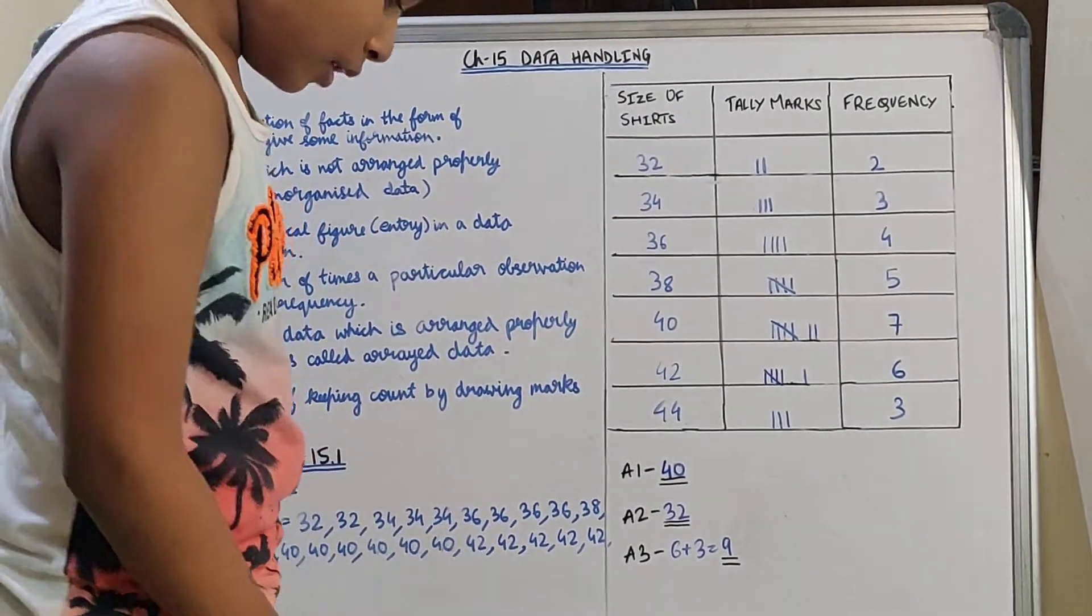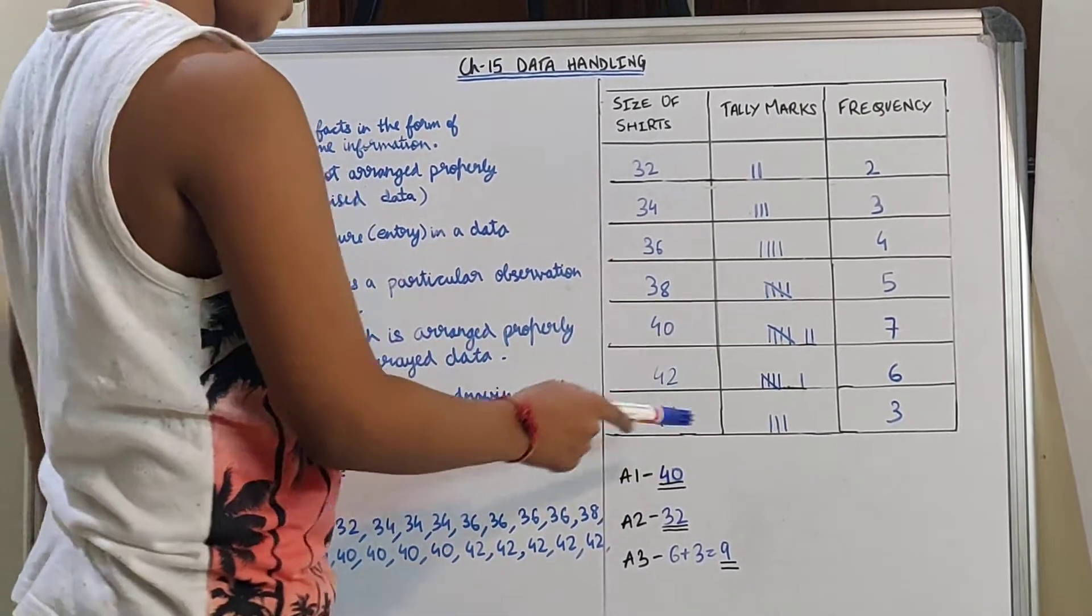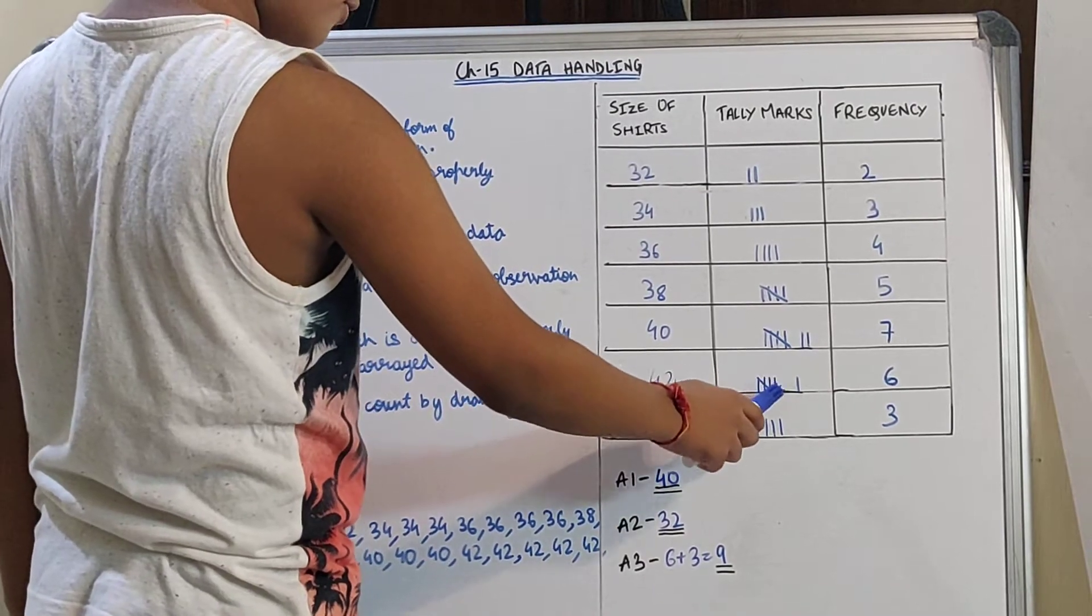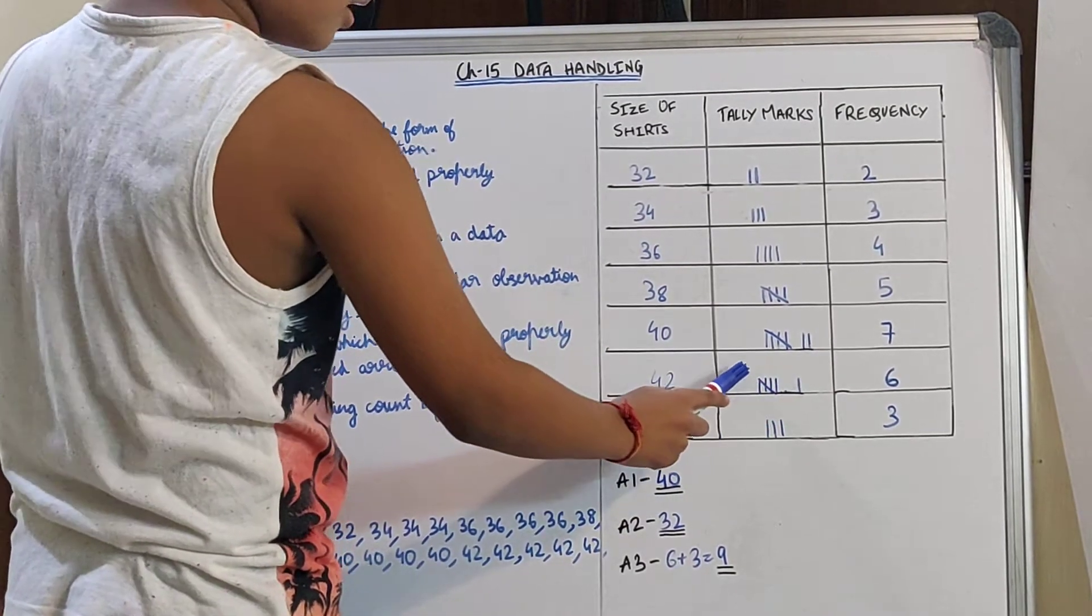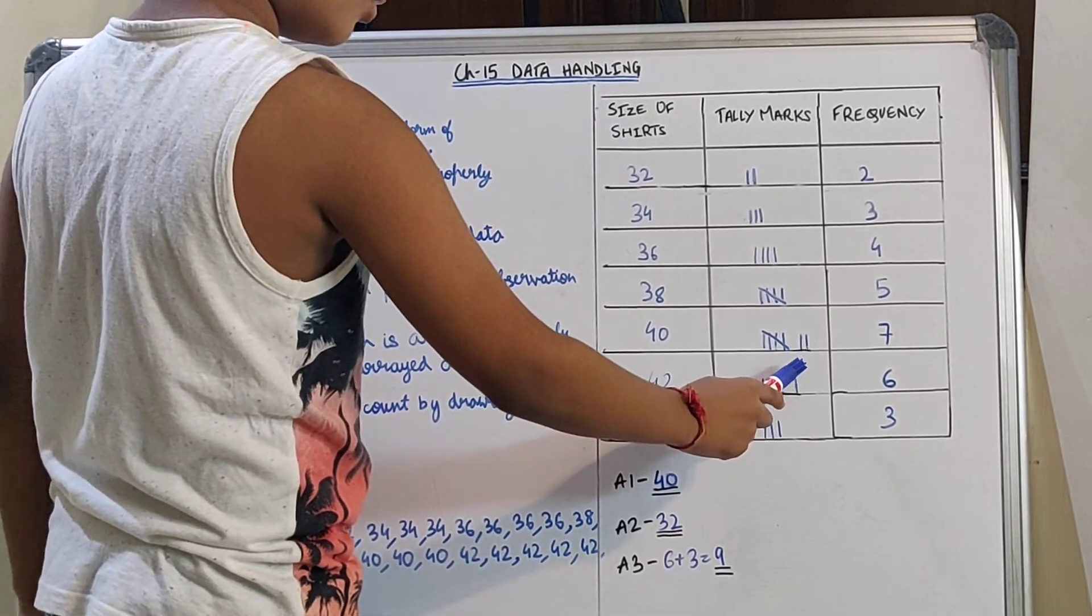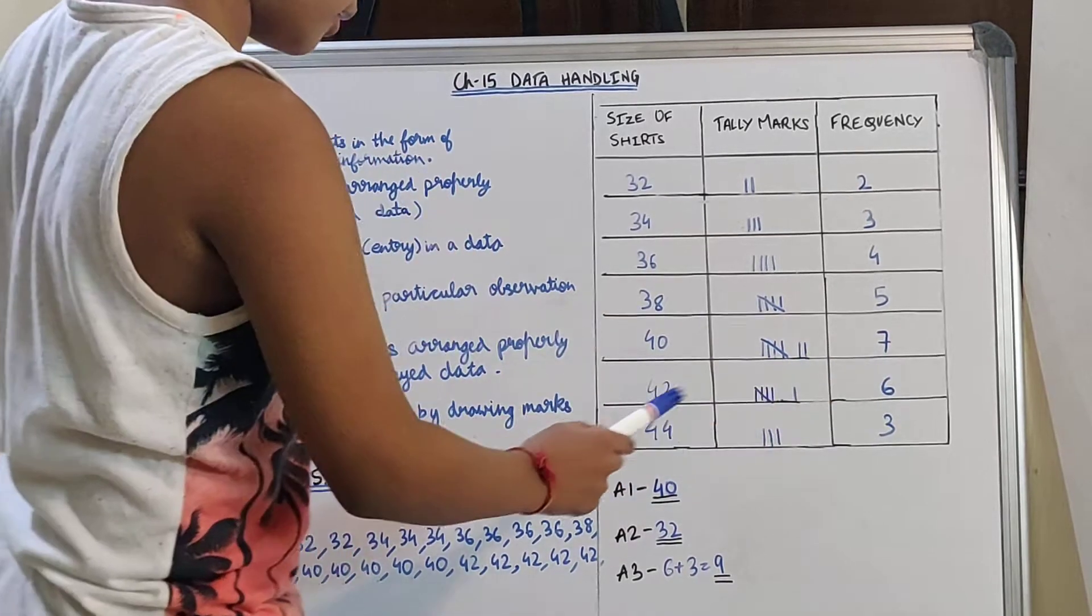Then 42. 42 is repeated 6 times. As the previous one, 4 will be written in tally marks, then the 5th one will be drawn diagonally, and another one tally mark will be written separately. And 6 in the frequency.